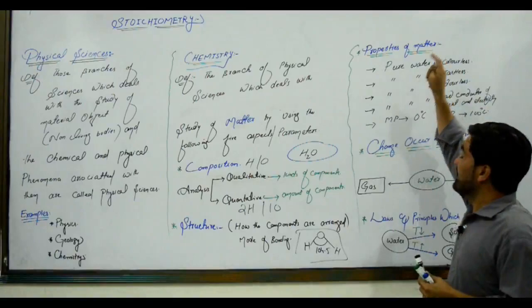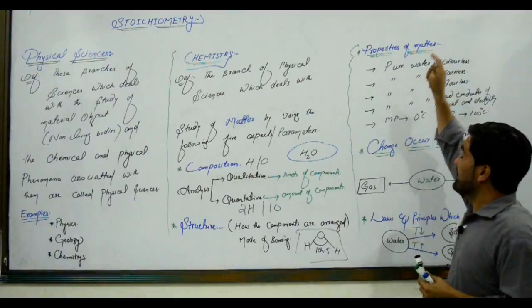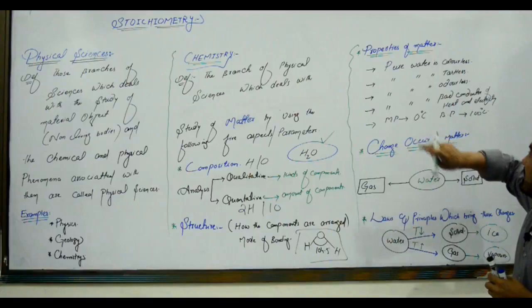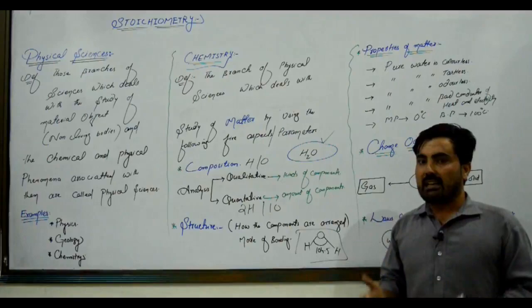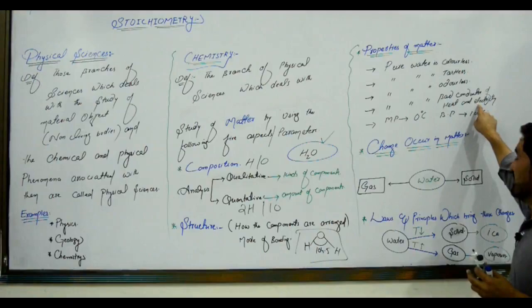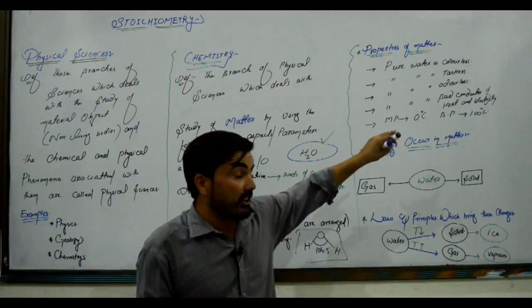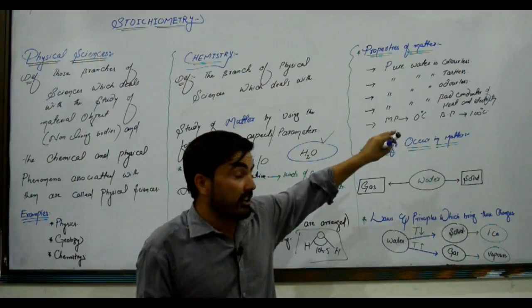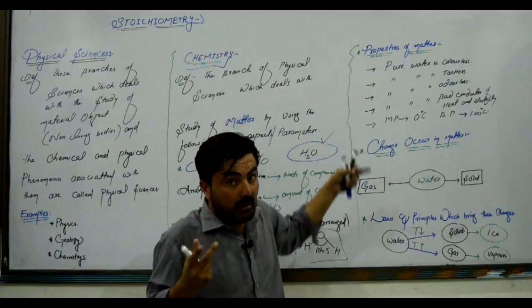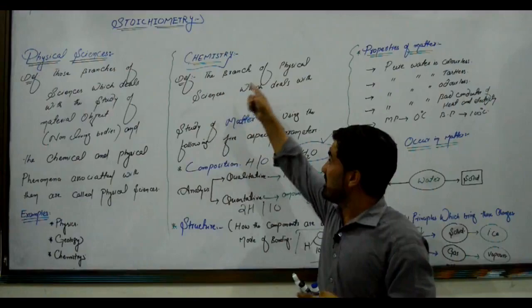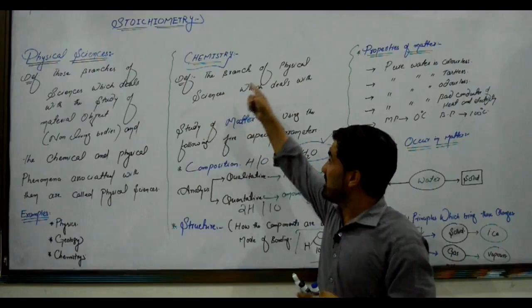The third aspect is properties of matter. If we take water as the targeted matter, its properties include: it is colorless, tasteless, it does not conduct electricity, it does not conduct heat under normal pressure. The melting point of water is 0 degrees centigrade, and the boiling point is 100 degrees centigrade. These are the properties of water studied in chemistry.